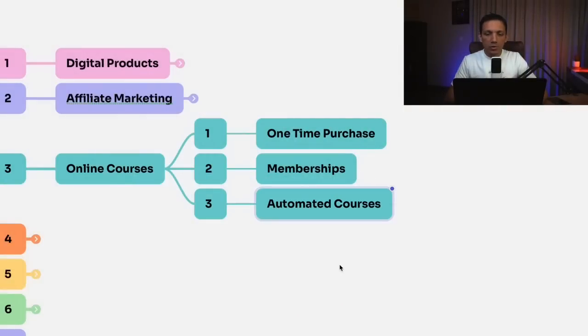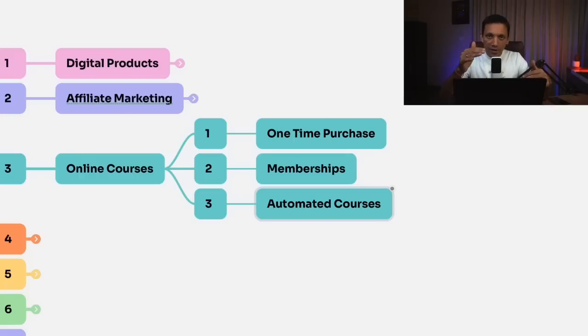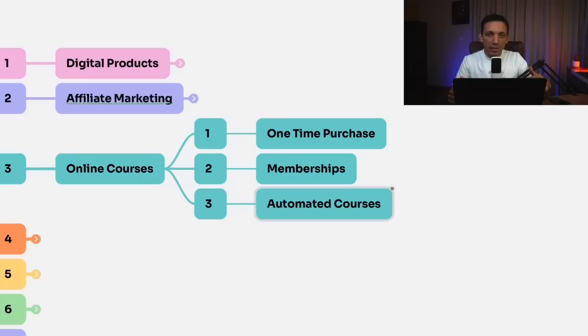The third thing you can do is sell automated courses. You can have cohort-based learning or challenges — people buy a course and complete a 30-day or 50-day challenge — but all of these challenges are delivered automatically through a drip sequence. This is the third way to monetize your knowledge and create passive income on the internet.